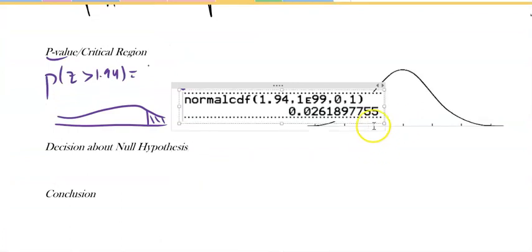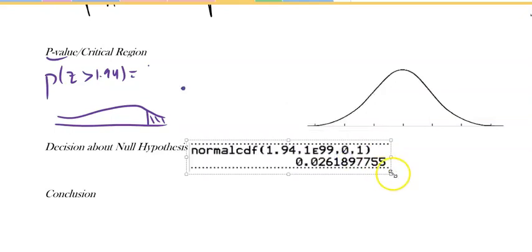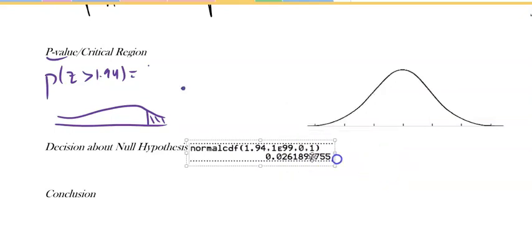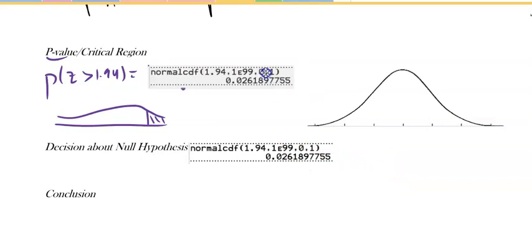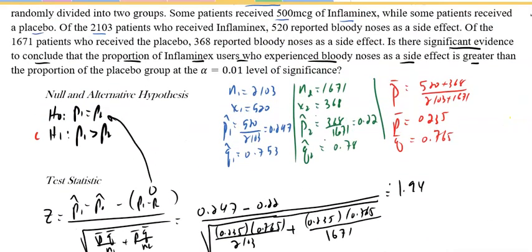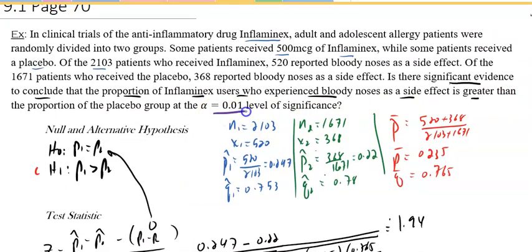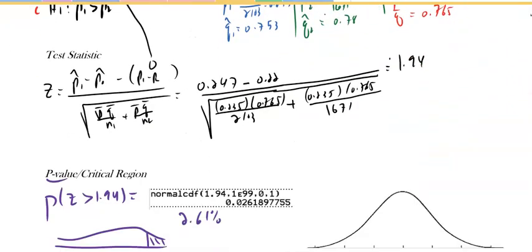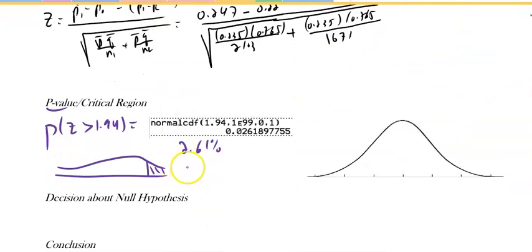That turns out to be 0.026, a 2.6 percent chance of that happening. Did they give us an alpha? Five percent I'd reject. They want alpha to be one percent, so this is greater than alpha, so we fail to reject.